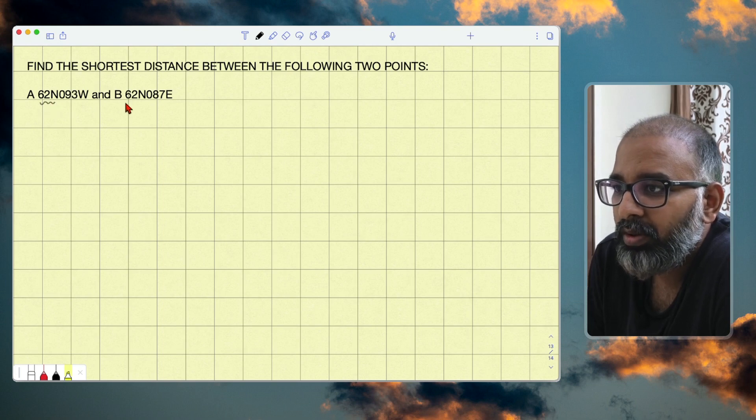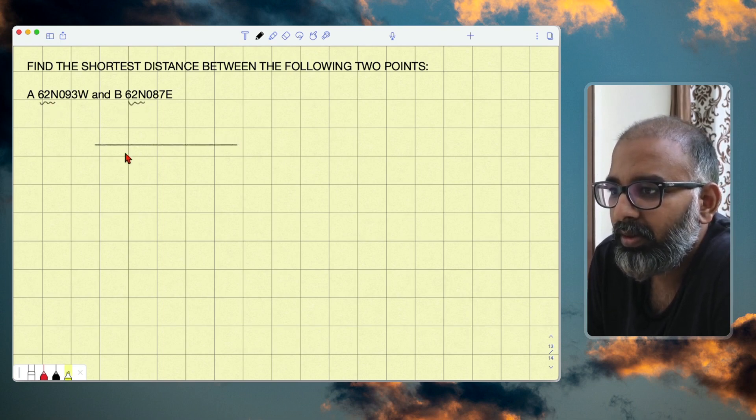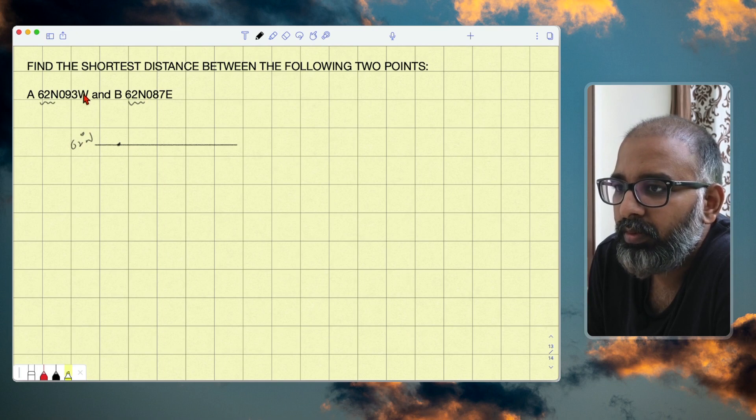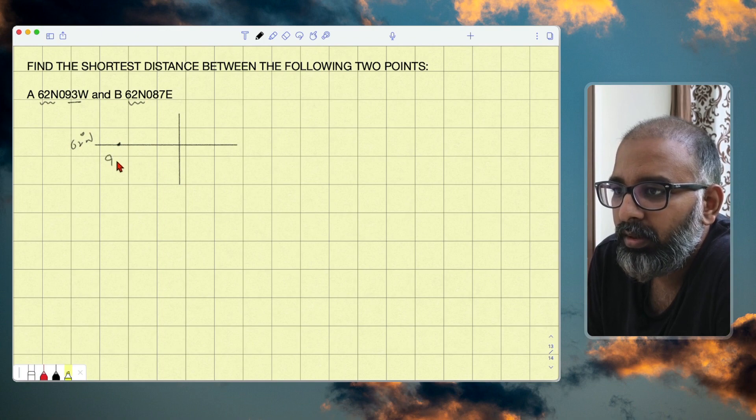You see 62 degrees north, that means these two points are lying on the same latitude - 62 degrees north. So you will mark this 93 as west. Let's say you will draw the prime meridian, 93 degrees west, and you will mark here 87 degrees east.